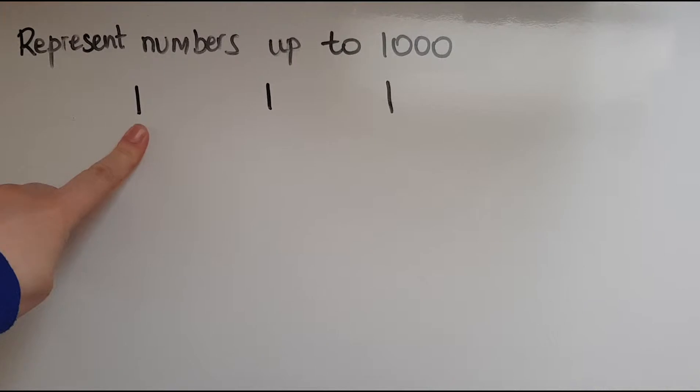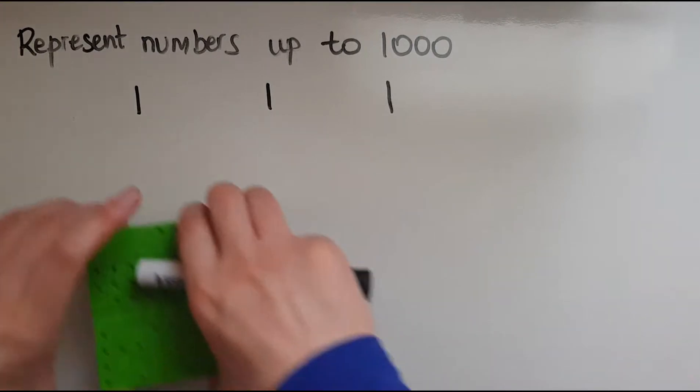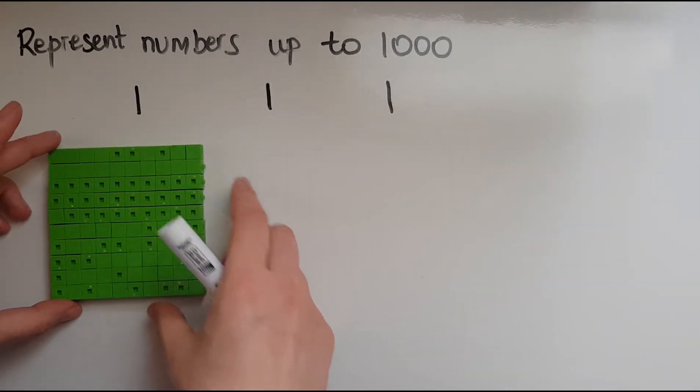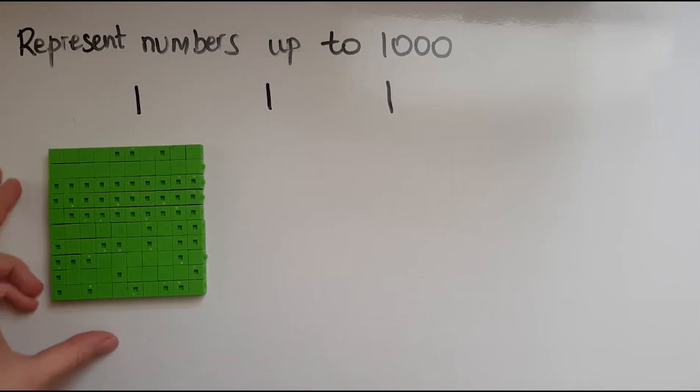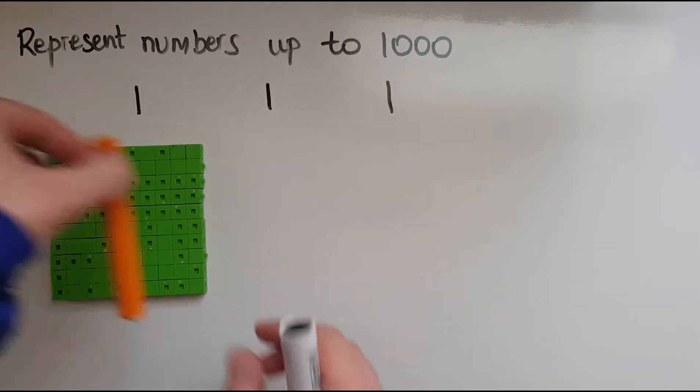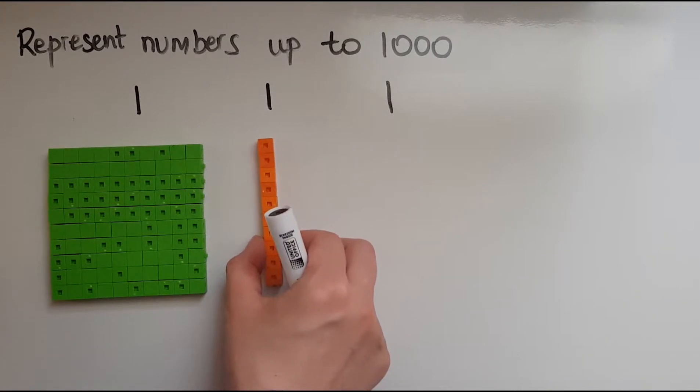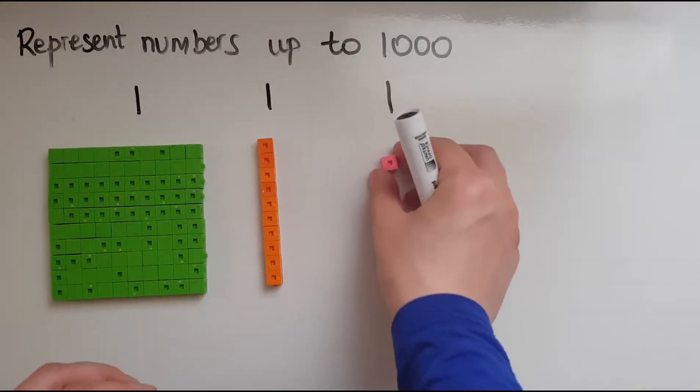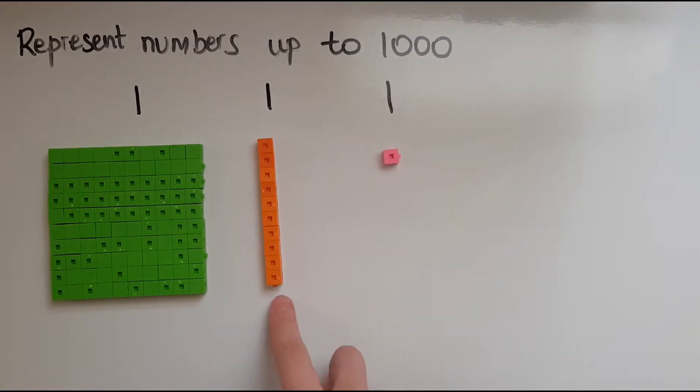So that's 100, which is represented by a block of 100 small cubes. And 11 is of 10 and 1. There is a block of 10 and here is 1 cube.